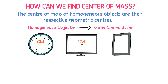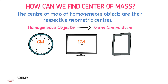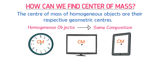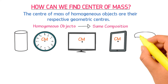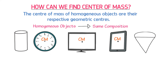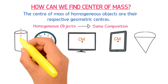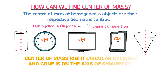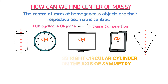Consider your iPad or cell phone — its geometrical shape is rectangular, and its geometrical center is at this point. Thus, the center of mass of your iPad is also at this point. Remember this bonus point: the center of mass of a right circular cylinder and cone is on the axis of symmetry.